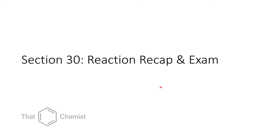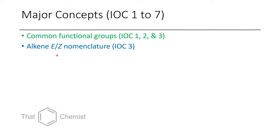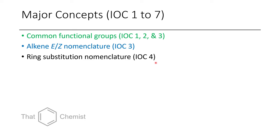Now let's get to today's material — a recap of the last 29 lectures with some exam questions. The major concepts from the first seven videos include common functional groups discussed in lectures 1, 2, and 3. IOC stands for Introduction to Organic Chemistry. In lecture 3, we talked about alkene E and Z nomenclature, and in lecture 4, ring substitution nomenclature.